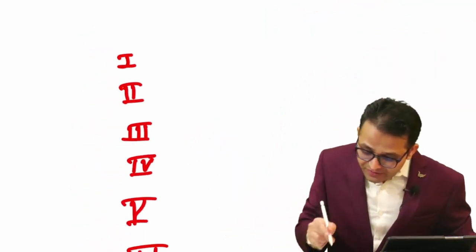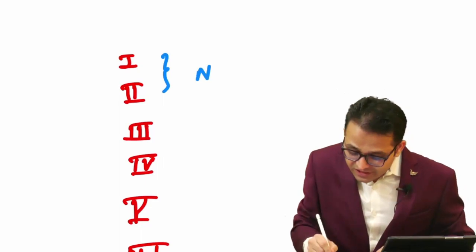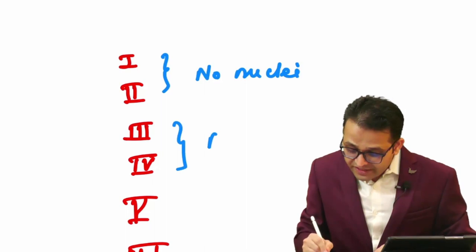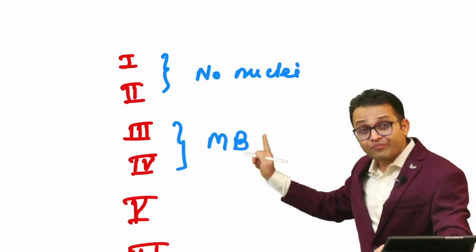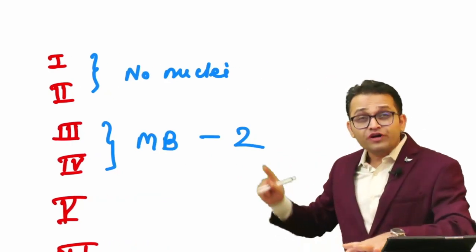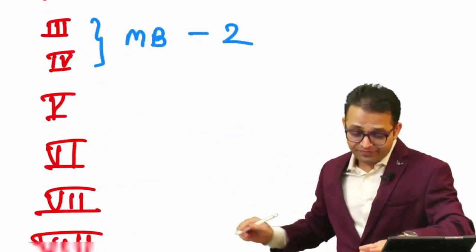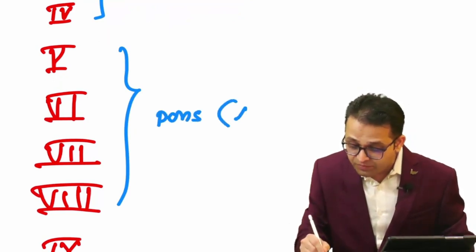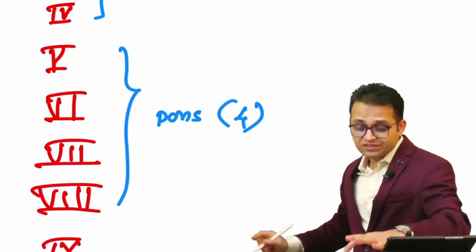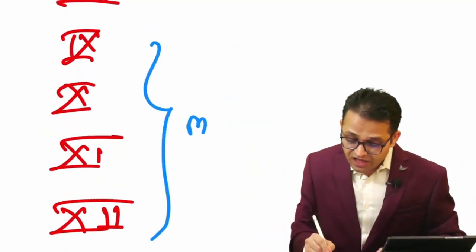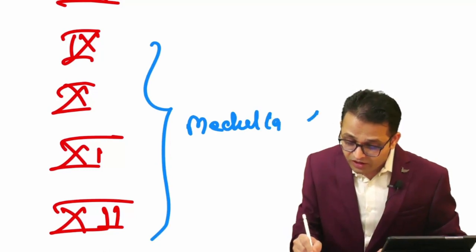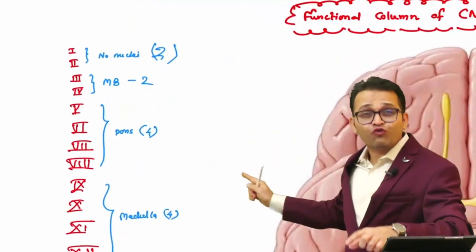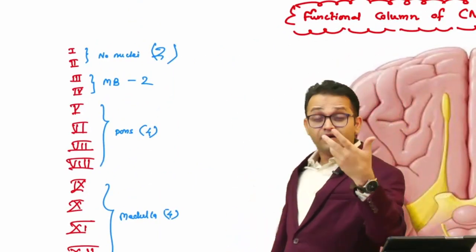In our classes, I already informed you: the first and second cranial nerves have no nuclei. The next two cranial nerves - third and fourth - have nuclei in the midbrain. Then fifth, sixth, seventh, and eighth cranial nerve nuclei are located in the pons. And the last four - ninth, tenth, eleventh, and twelfth - are located in the medulla.